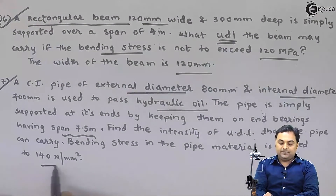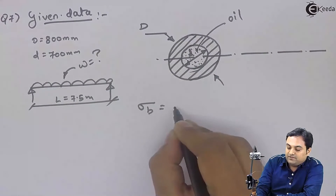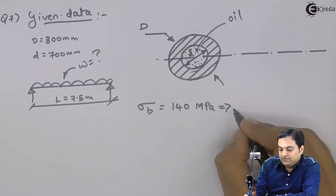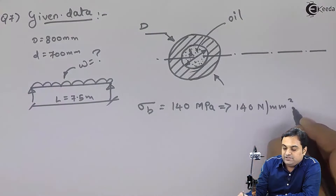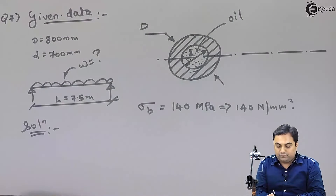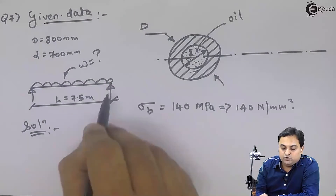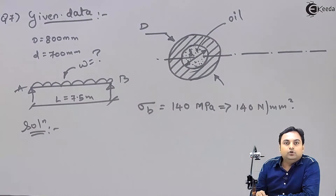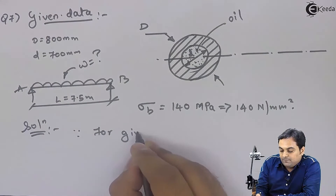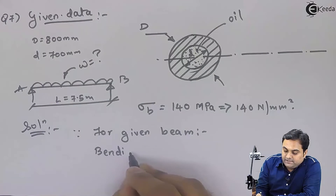The bending stress in the pipe material is limited to 140 N/mm², so sigma_b = 140. This question is similar to the previous one, except that here we have a hollow circular section instead of a rectangular section. The solution approach is the same — for a simply supported beam with UDL, the bending moment formula applies.